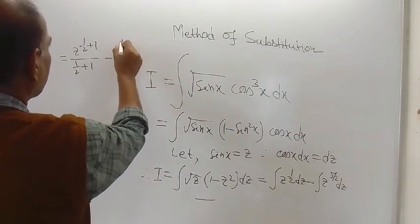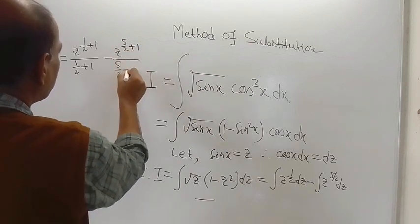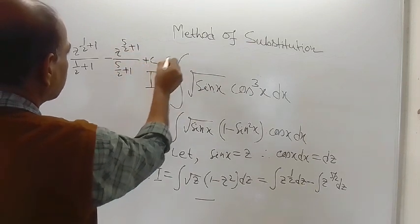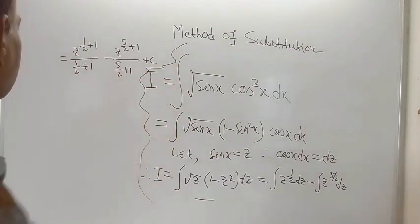So it is z to the power 5 by 2 plus 1 divided by 5 by 2 plus 1, plus a constant of integration c. This is constant of integration c.